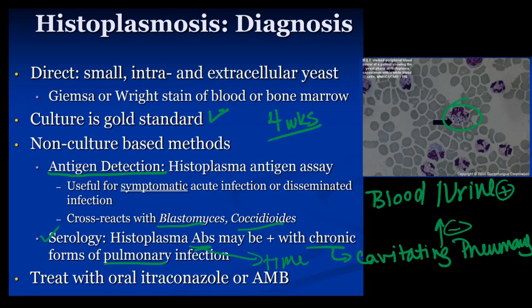Treating histo, there are really only two drugs: itraconazole or amphotericin B. Those are pretty much the standard of treatment.